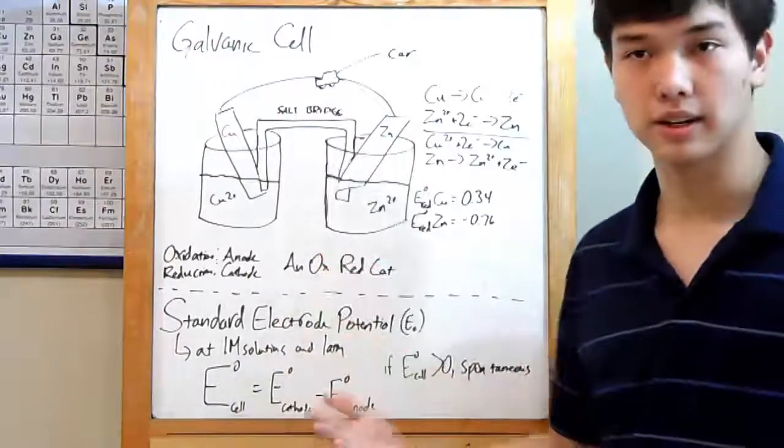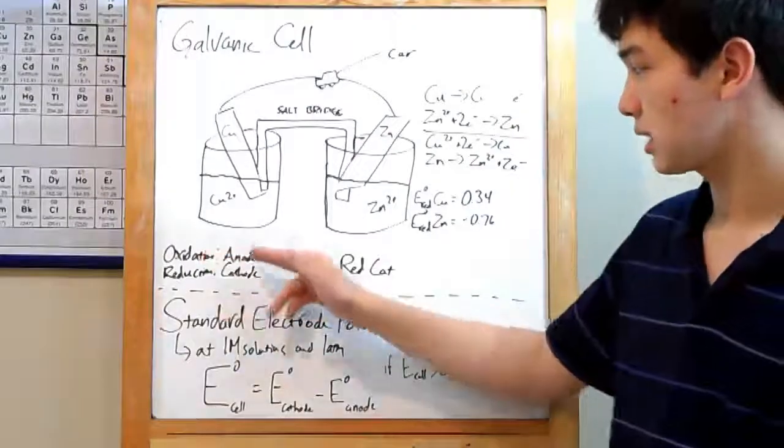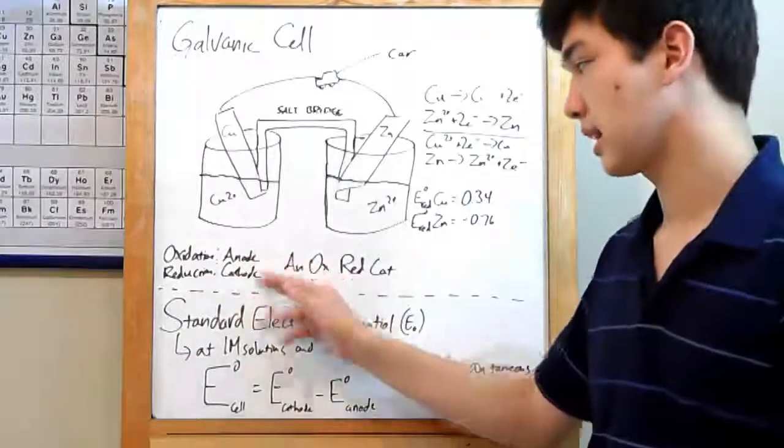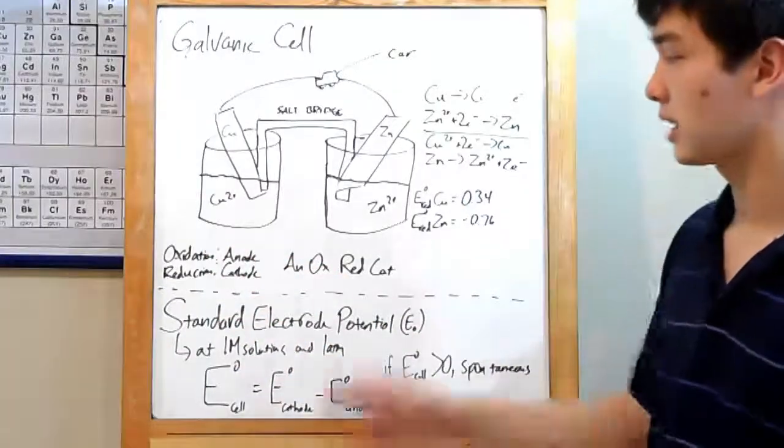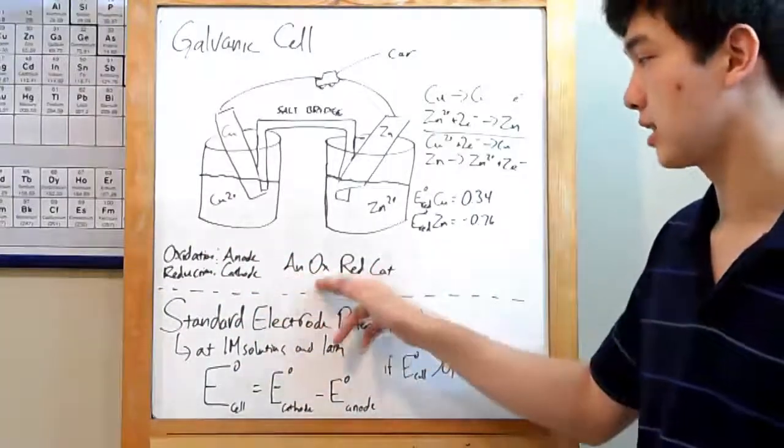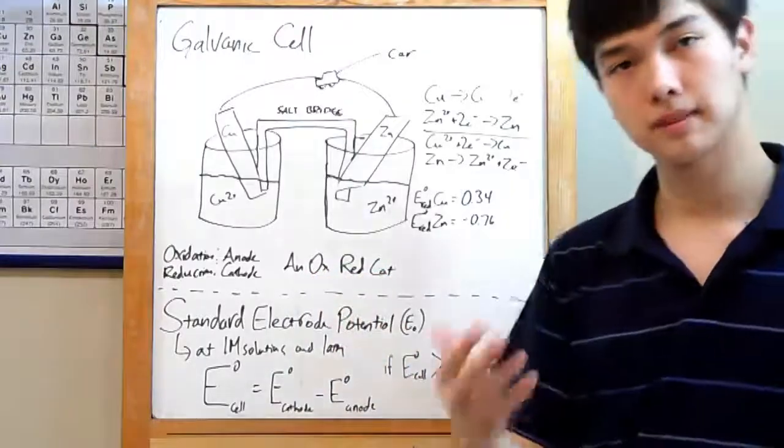The last part are the anode and cathode. Oxidation will occur at the anode and reduction will occur at the cathode. To remember this, use the mnemonic an-ox-red-cat. Anode, oxidation, reduction, cathode. Simple.